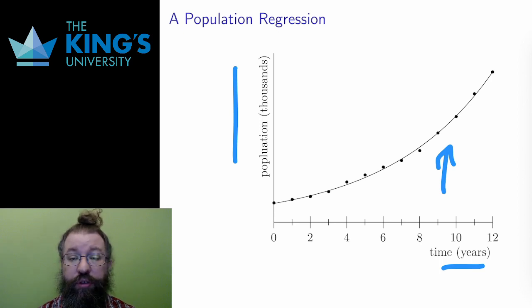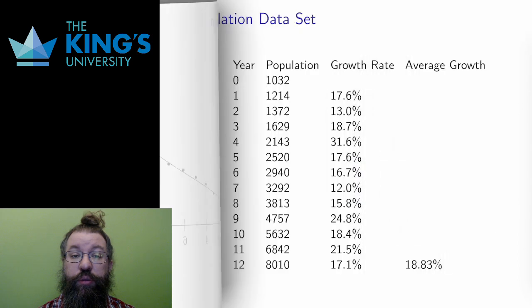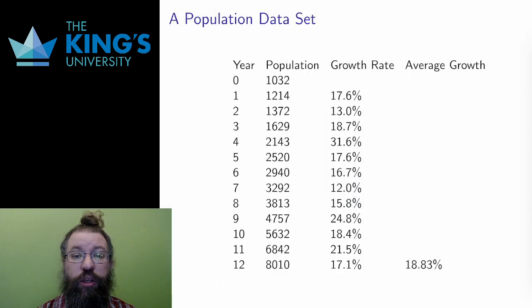Now, let me give you some justification for this choice of an exponential regression. Let's go back to the data and look at how long it takes for a population to double. From year 0, just over 1,000, it takes 4 years to cross 2,000.